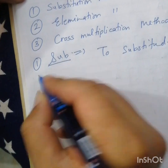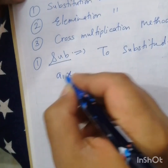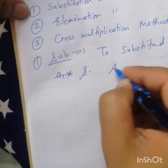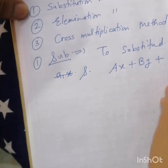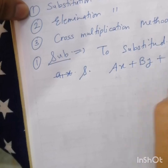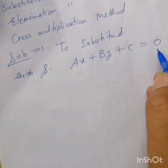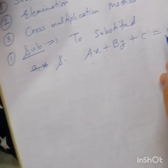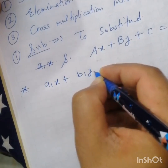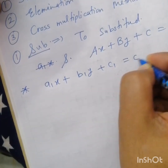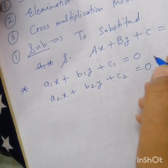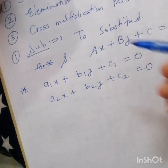In this method, two equations are given. The standard form of a linear equation is ax plus by plus c equals zero, where a is the coefficient of x, b is the coefficient of y, and c is a constant term. Suppose there are two equations: a1x plus b1y plus c1 equals zero and a2x plus b2y plus c2 equals zero.